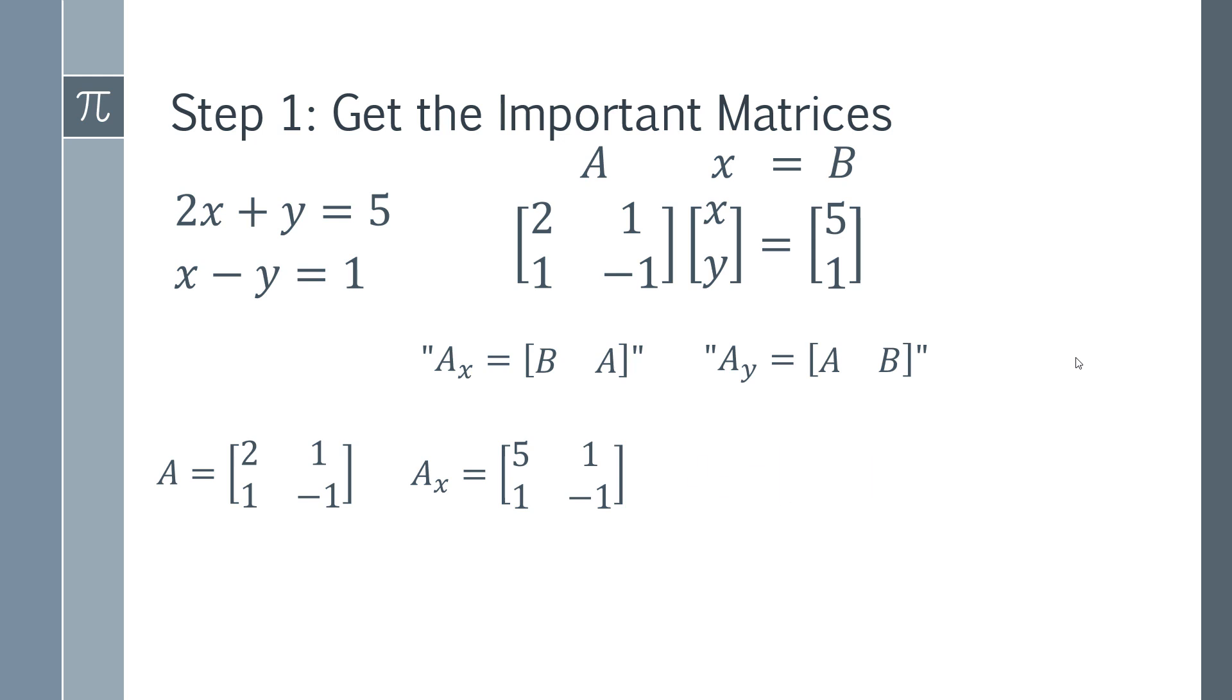We can then apply the same thing to get matrix AY. Matrix AY is going to have 5, 1 copied into the Y position - the second column. Then you copy the rest of A in. So we've got the matrices that are going to be essential in order to apply Cramer's rule.